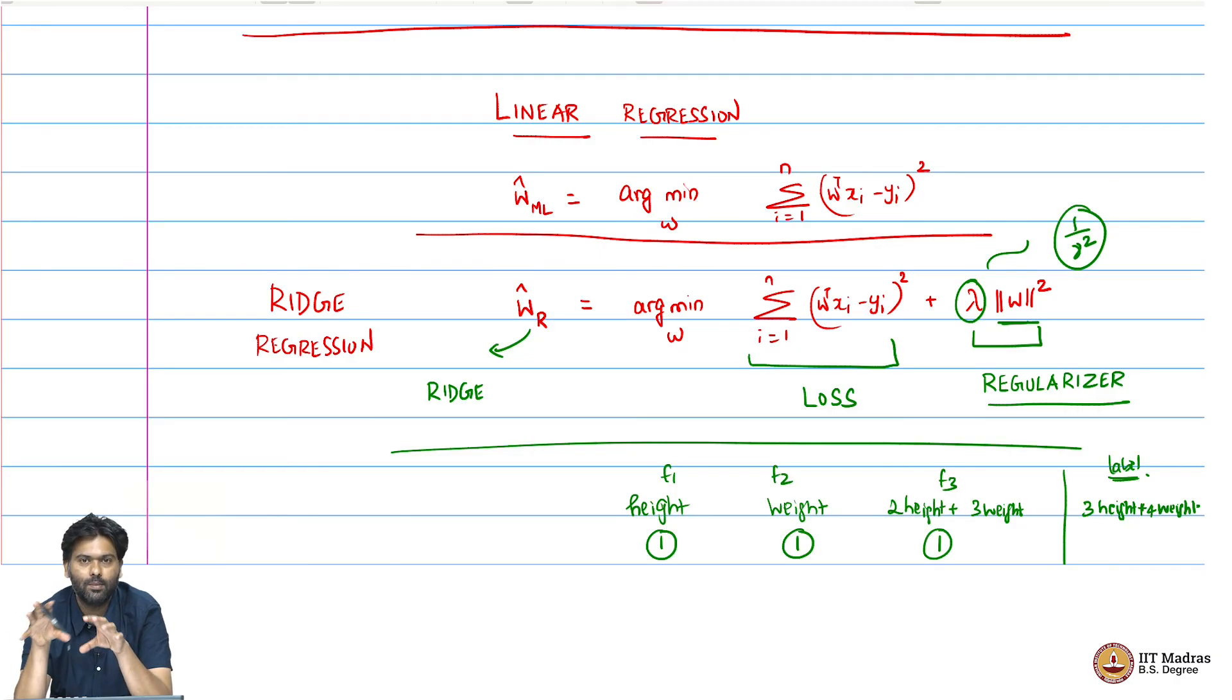You can think of these two terms as balancing how much loss you want versus how much redundancy you want to avoid. That is what ridge regression is trying to do.